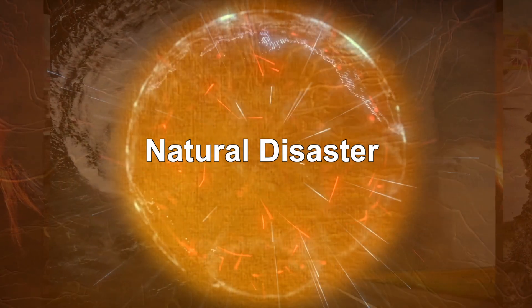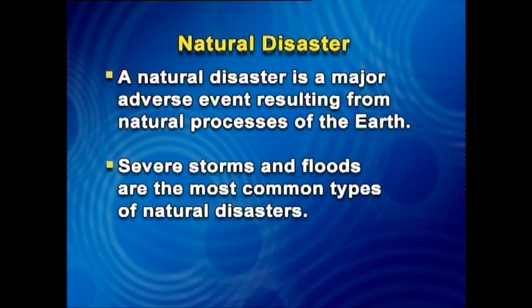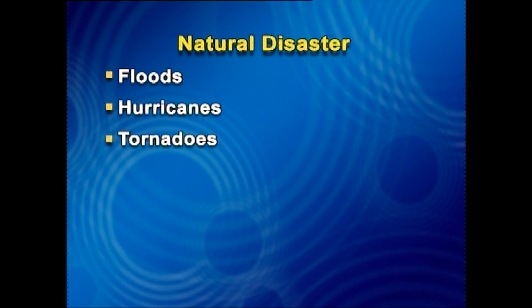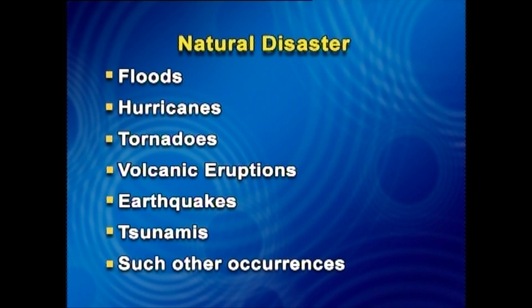Natural Disaster. A natural disaster is a major adverse event resulting from natural processes of the Earth. Severe storms and floods are the most common types of natural disasters. Other examples include floods, hurricanes, tornadoes, volcanic eruptions, earthquakes, tsunamis, and such other occurrences.